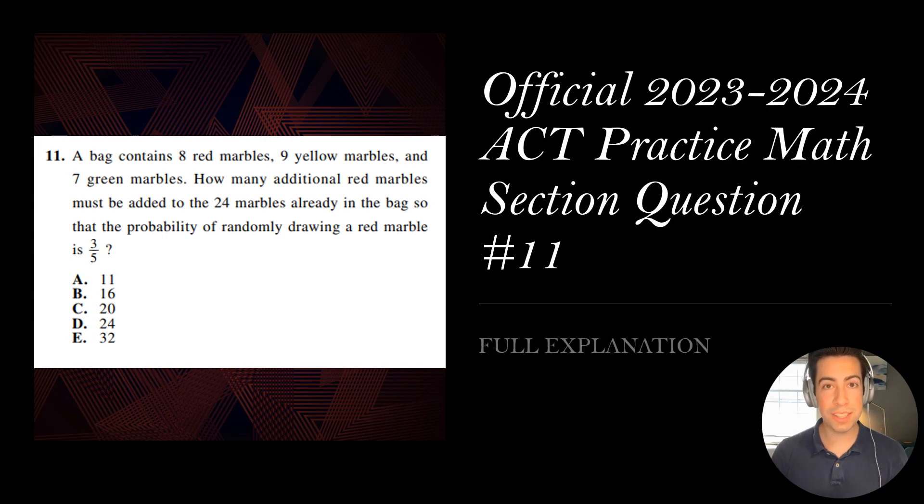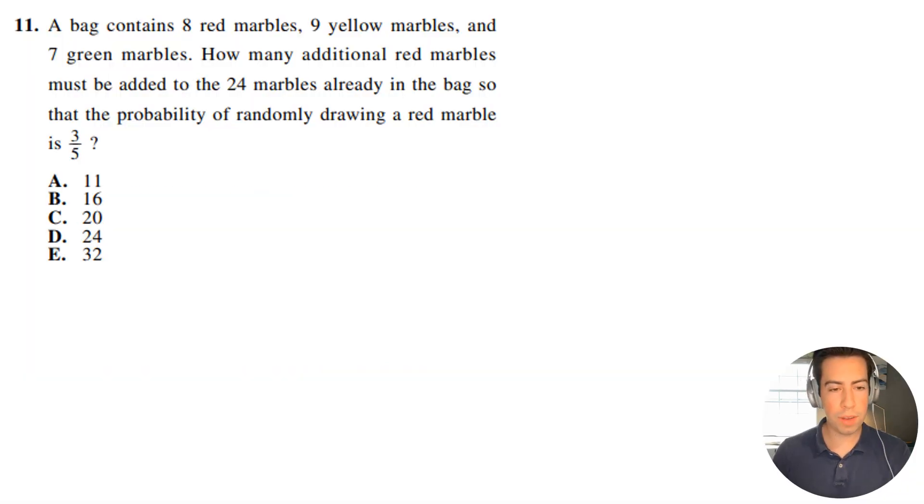All right, question number 11. Let's get right into it. So we have a bag contains eight red marbles, nine yellow marbles, and seven green marbles. How many additional red marbles must be added to the 24 marbles already in the bag so the probability of randomly drawing a red marble is three out of five.